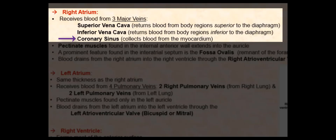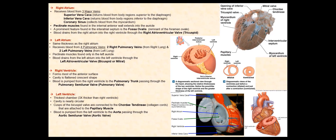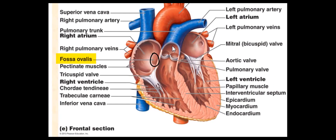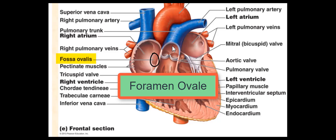The third major vein is the coronary sinus, which is significantly smaller in diameter than the other two major veins. Blood from structures of the heart, including the myocardium, drain into the coronary sinus and into the right atrium. There is a small, shallow depression found in the interatrial septum of the right atrium called the fossa ovalis. During fetal development, this was an opening called the foramen ovale. The foramen ovale will eventually close to form the fossa ovalis before the birth of the baby.